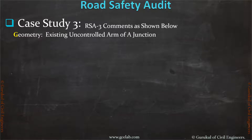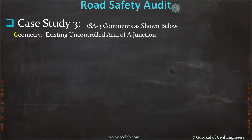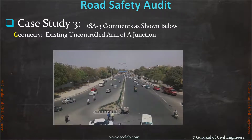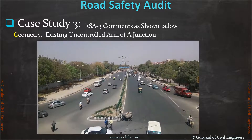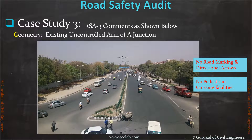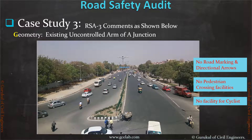Once you understand all stages of Road Safety Audit, you will learn how to audit an unsafe junction. This is an example of an unsafe junction: there is no road marking and no directional arrows, no pedestrian crossing facilities, no facilities for cyclists, and no speed monitoring cameras.